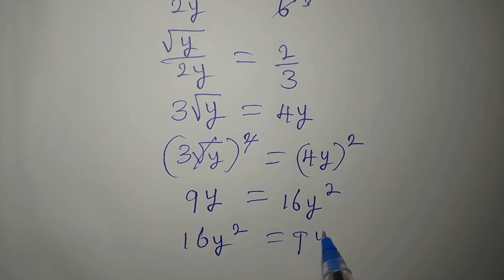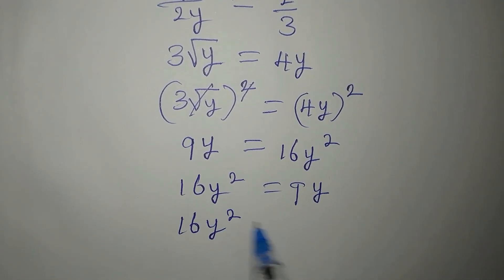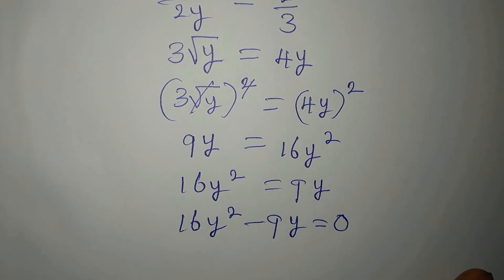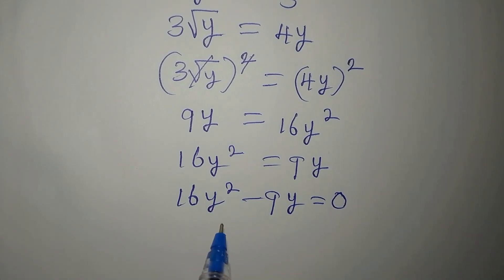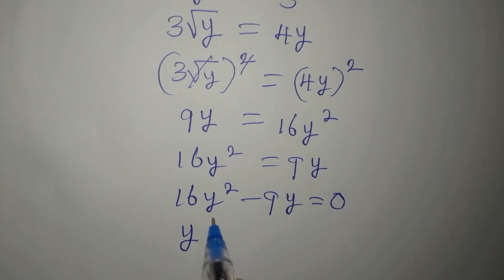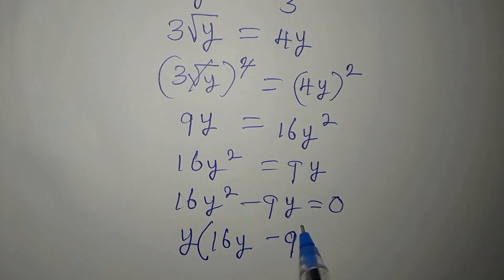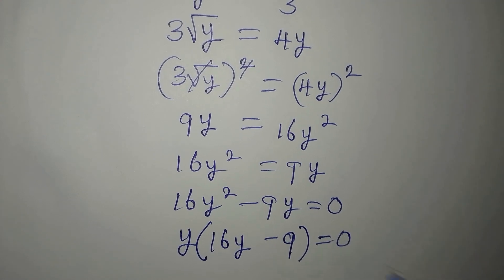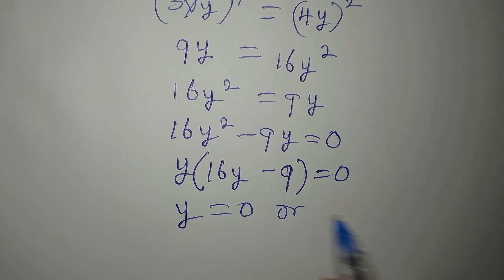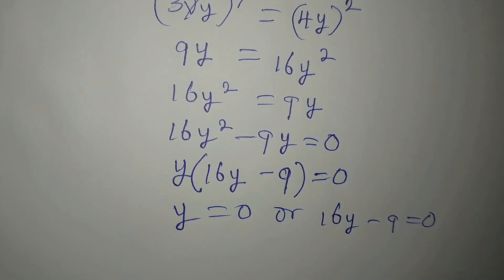On the right, 4 squared is 16 and y squared remains, giving us 16y squared. Bring 9y to the right so we have 16y squared minus 9y equals 0. We can factorize because y is common to both terms, giving us y times (16y minus 9) equals 0.